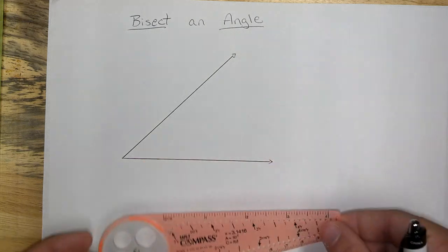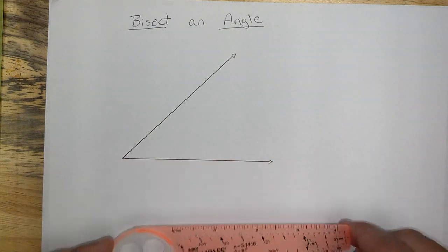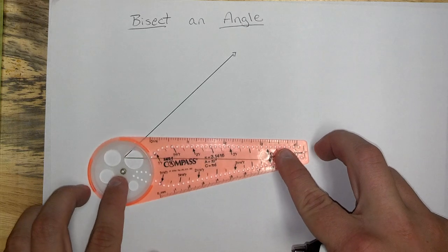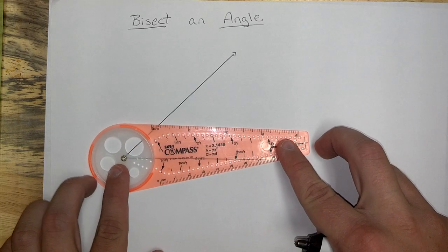Next, have a compass. In this case, a nice safety compass. Go ahead and put that brass ring right on the vertex of your angle.